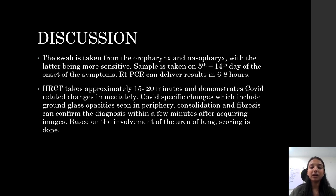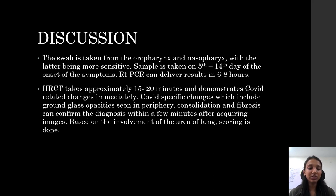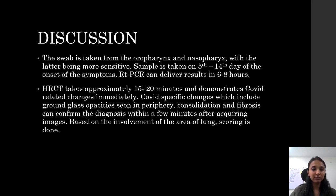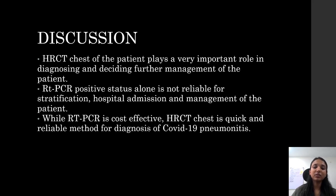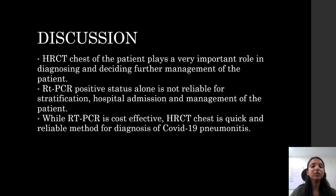RT-PCR can deliver results in 6 to 8 hours. HRCT takes approximately 15 to 20 minutes and demonstrates COVID-19 related changes immediately. COVID-specific changes including ground glass opacity seen in the periphery, consolidation, and fibrosis can confirm the diagnosis within a few minutes after acquiring images. Based on the involvement of the area of lung, scoring is done. HRCT chest plays a very important role in diagnosis and deciding further management of the patient, while RT-PCR positive status alone is not reliable for stratification, hospital administration, and management.